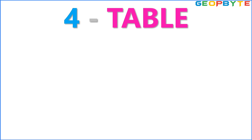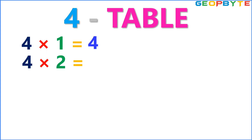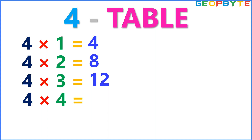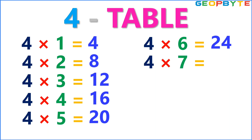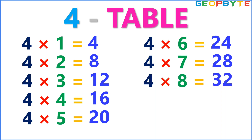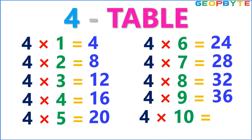Now let us see the 4 table. 4 1s are 4. 4 2s are 8. 4 3s are 12. 4 4s are 16. 4 5s are 20. 4 6s are 24. 4 7s are 28. 4 8s are 32. 4 9s are 36. 4 10s are 40.